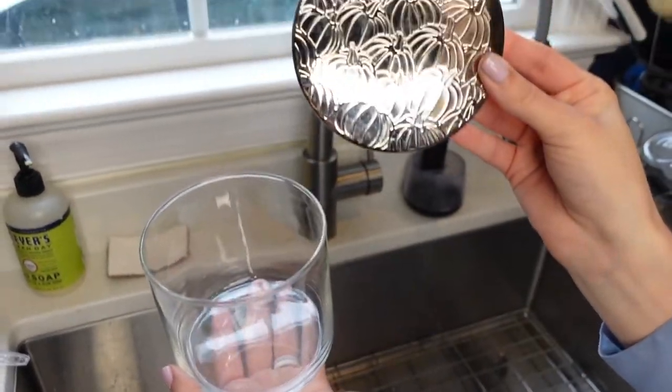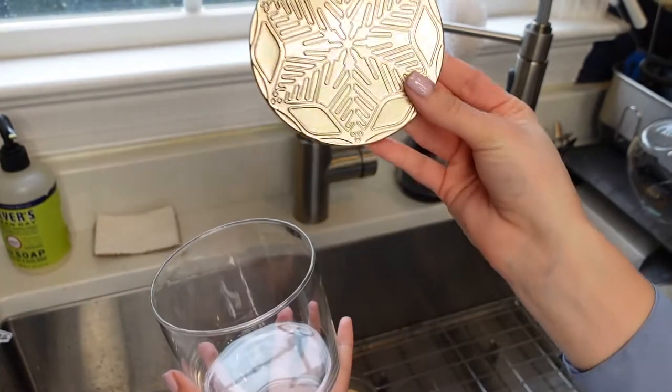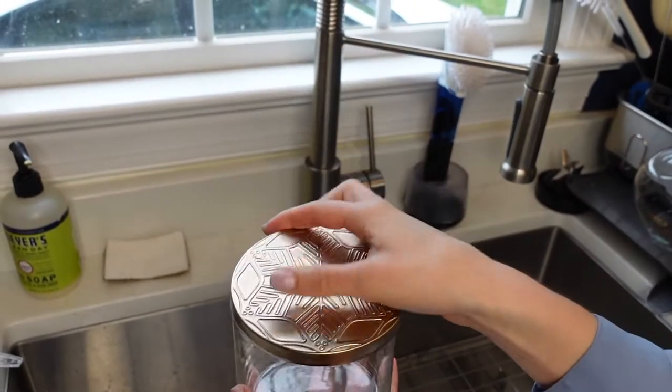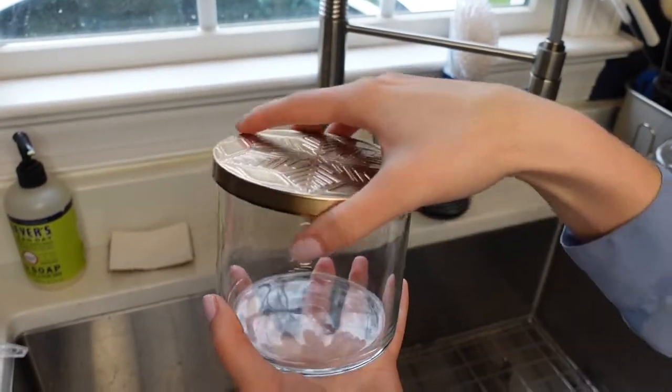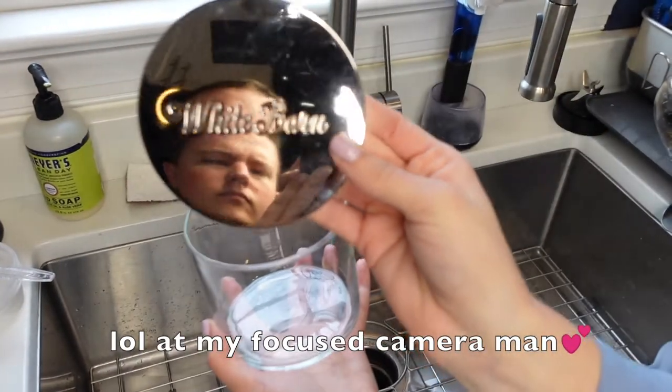Here's your jar. It's fall time, use a pumpkin top. It's Christmas or winter, use a little snowflake like so. Or if it's just any other time, you can use the normal White Barn one.